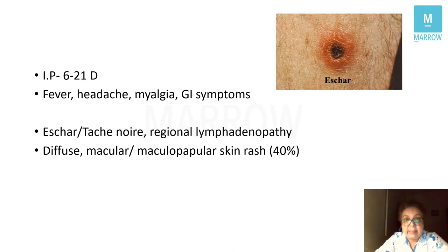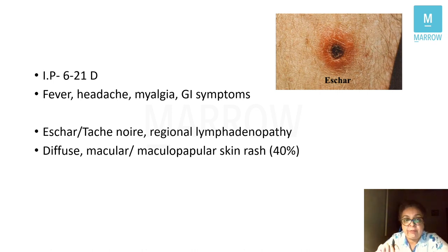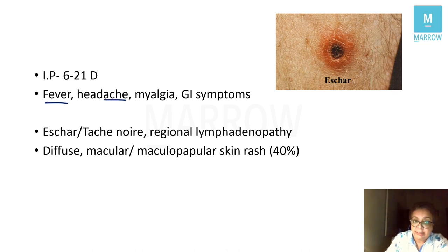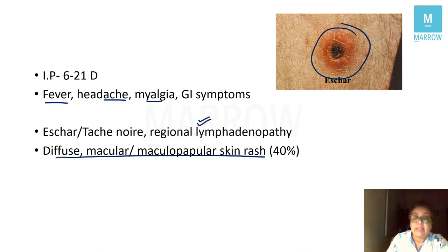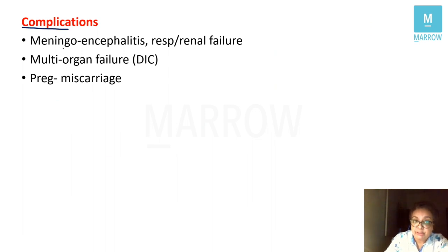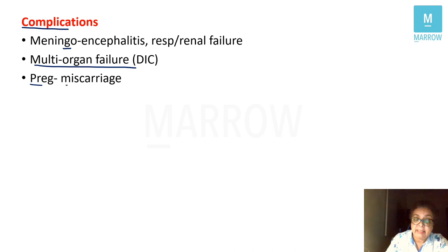Scrub typhus has an incubation period of 6 to 21 days. Rickettsial diseases have a characteristic triad of fever, rash, and vasculitis — also remember myalgias. Clinical features include fever, headache, myalgias, and a diffuse macular or maculopapular rash. At the site of the chigger bite is the characteristic eschar or tache noire, with regional lymphadenopathy. Severe cases develop complications: meningoencephalitis, respiratory failure, renal failure, multi-organ failure, and in pregnancy — miscarriage.